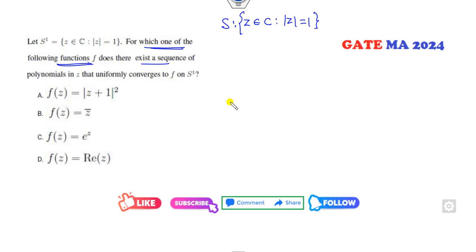Which of the following functions F: there exists a sequence of polynomials that uniformly converges to F on S? Very simple. You can think about this concept. Firstly, if you prove that S is compact—is it compact? You can check: it is bounded, yes; it's closed, yes. So S is compact.